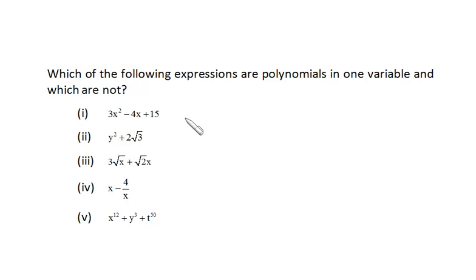Friends, we have already discussed if a polynomial is having a single variable then it is known to be the polynomial in one variable. So here we see there is only one variable, that is x, so it's a polynomial in one variable. Here we see it's a polynomial in one variable once again since there is only one variable y.